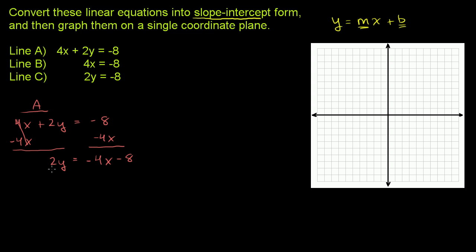Let's divide both sides by 2. Divide the left-hand side by 2 and then divide the right-hand side by 2. You have to divide every term by 2. And then we are left with y equals negative 4 divided by 2 is negative 2x. Negative 8 divided by 2 is negative 4. Negative 2x minus 4. So this is line A.